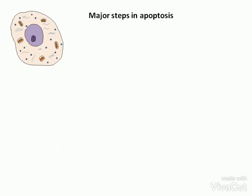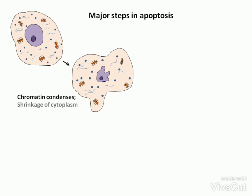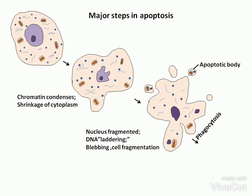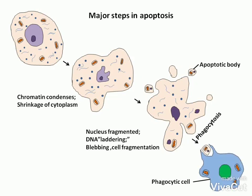As a cell begins to undergo apoptosis, its chromatin condenses and cytoplasm shrinks. Eventually, the nucleus becomes fragmented and the DNA in the nucleus is digested at regular intervals, called laddering. The cytoplasm becomes fragmented and the cell extends numerous blebs. Ultimately, the remnants of the dead cells, or apoptotic bodies, are ingested or phagocytosed by phagocytic cells.